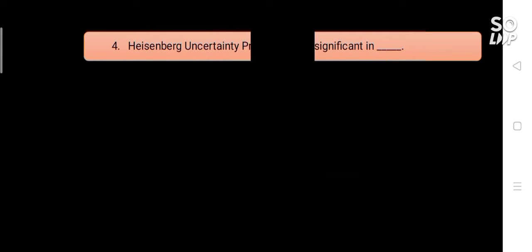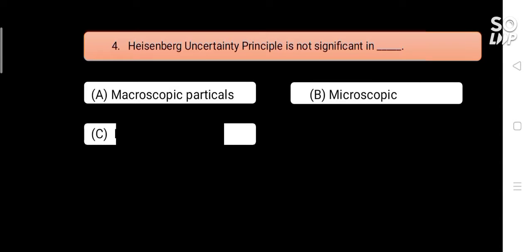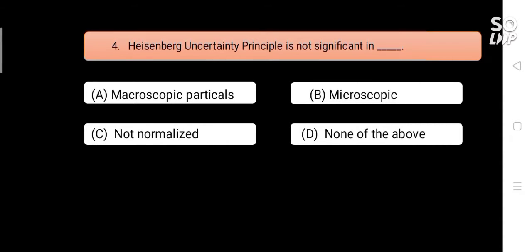Heisenberg Uncertainty Principle is not significant in blank. Options are: A) macroscopic particles, B) microscopic particles, C) atomic particles, D) none of the above. Answer is A) macroscopic particles.